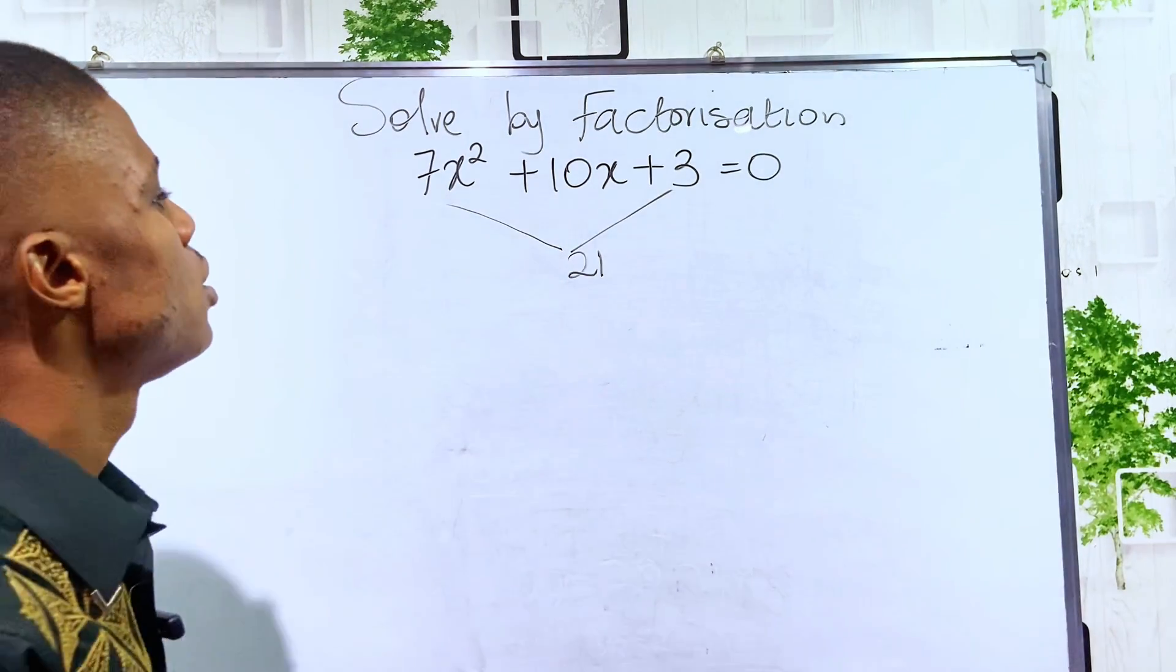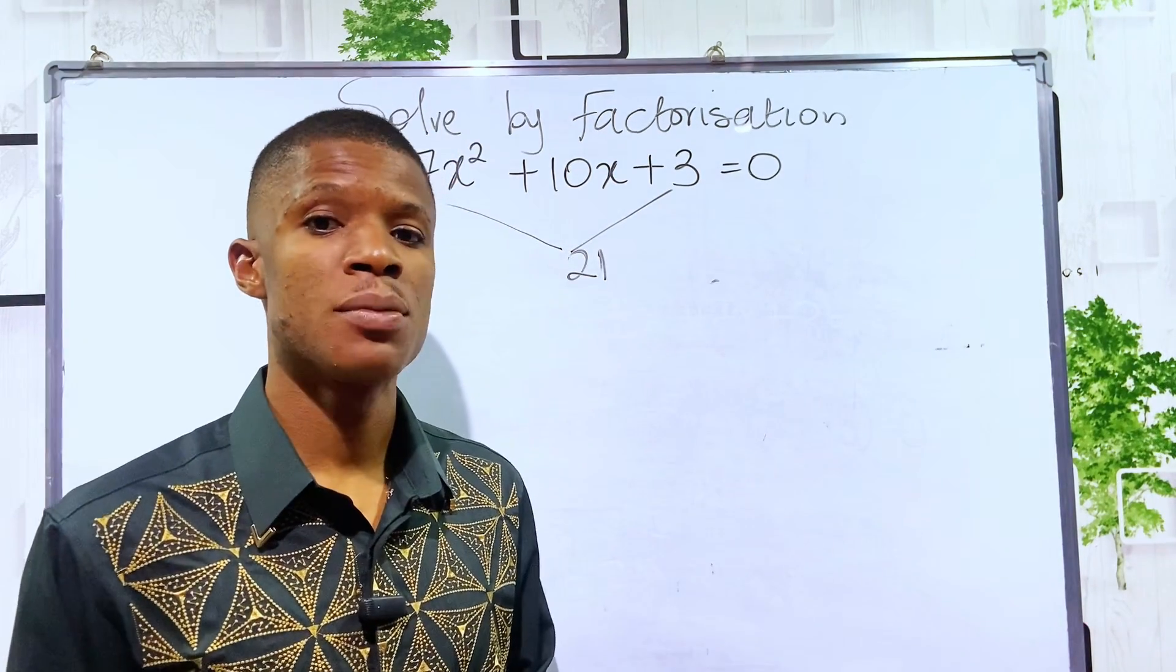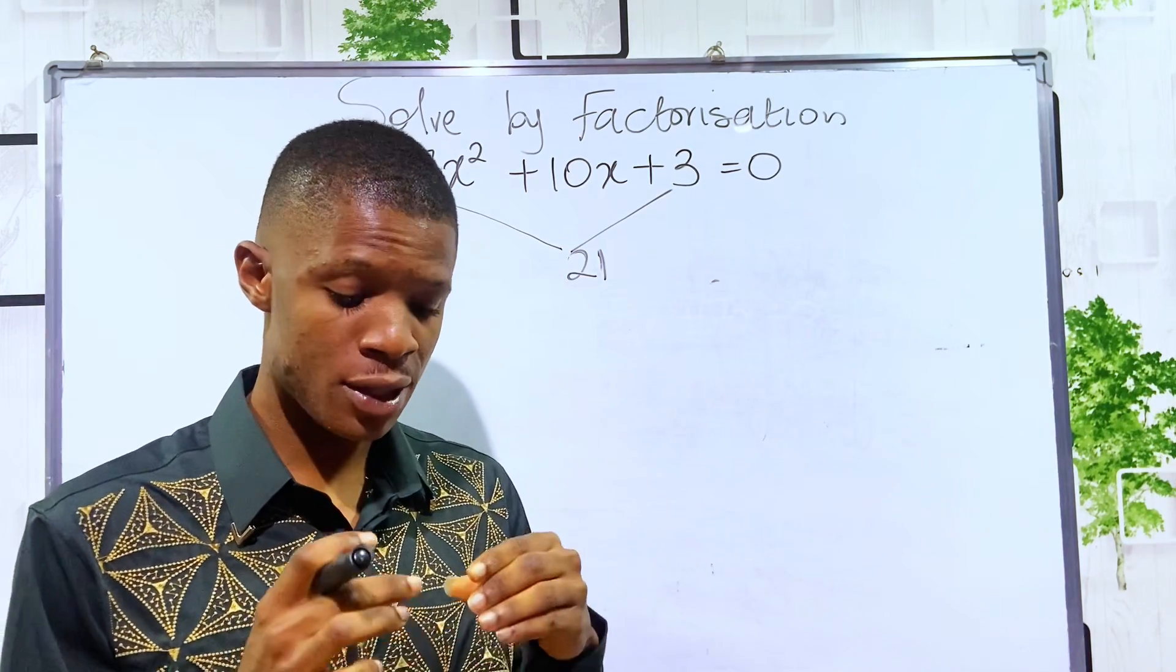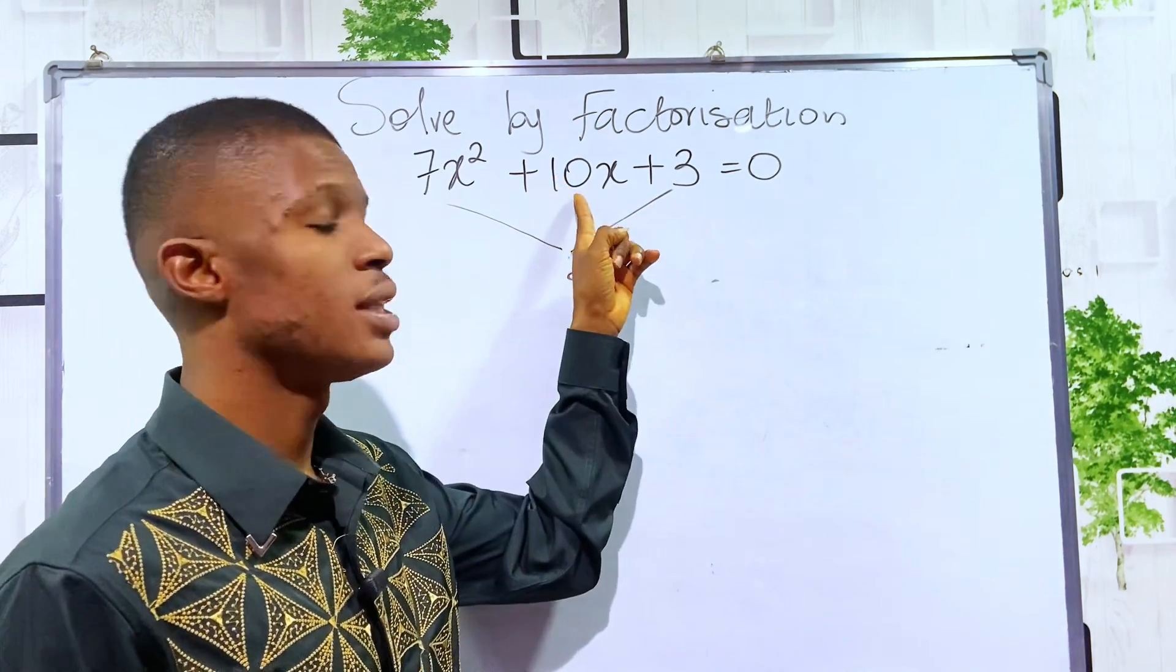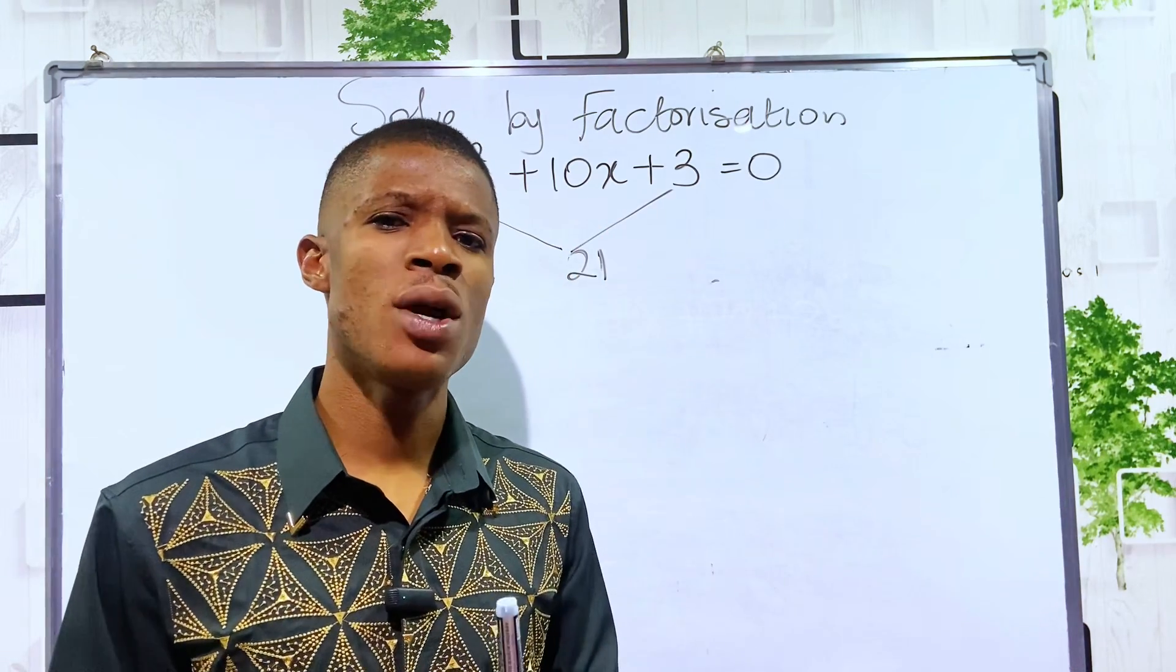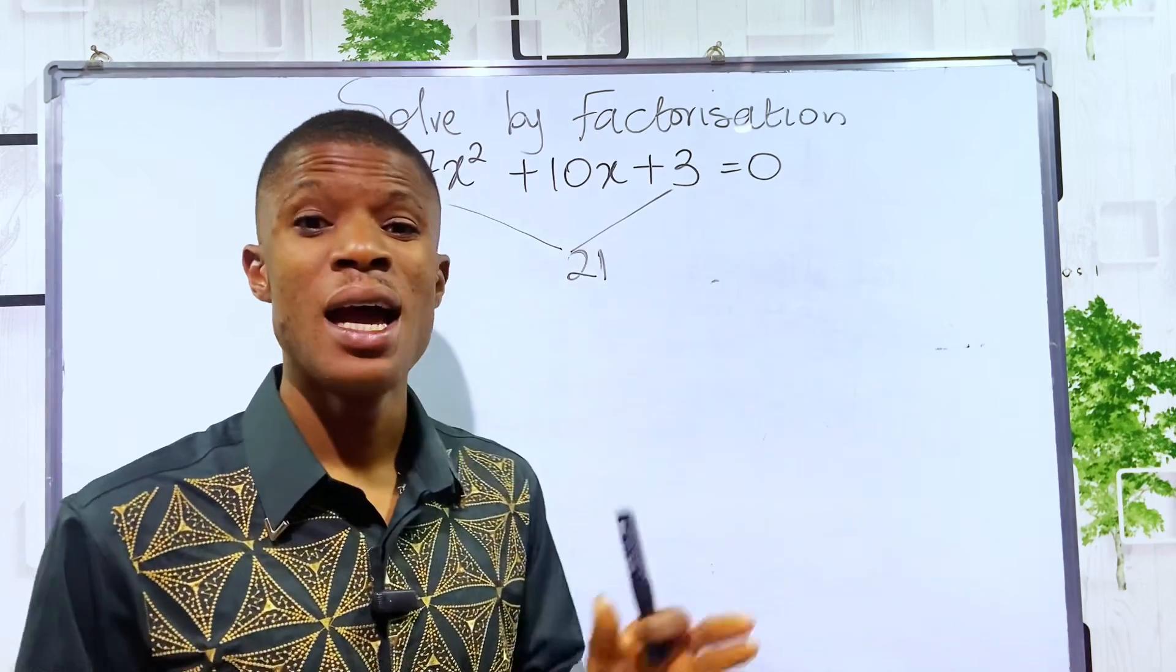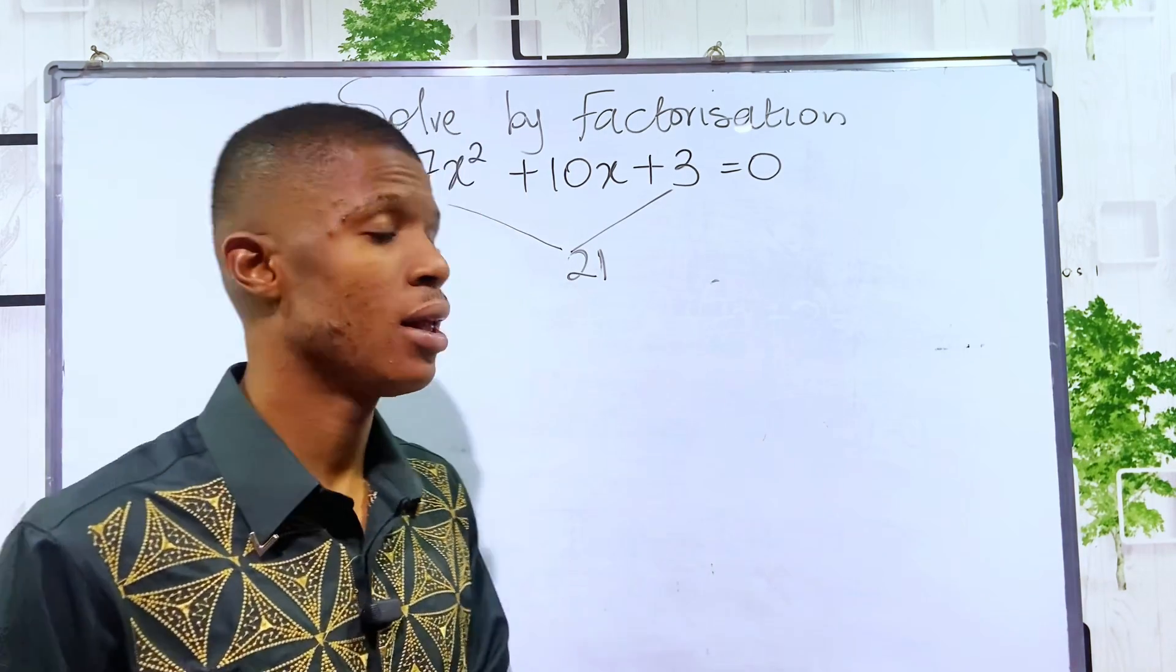Since we've gotten 21, find two numbers that when you multiply them, you get 21. But be sure that if you add the two factors, you get 10. You see that when you multiply 3 and 7 together, you have 21. And when you add 3 and 7 together, you have 10.